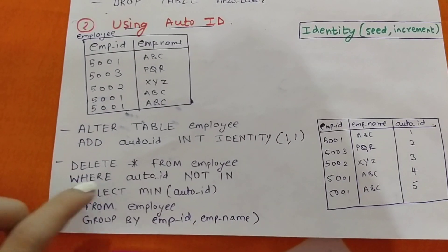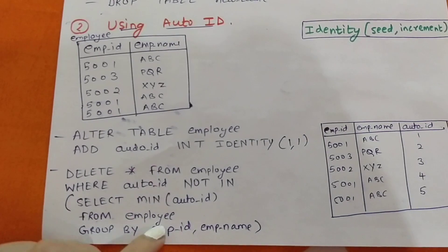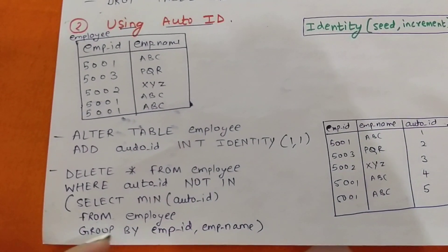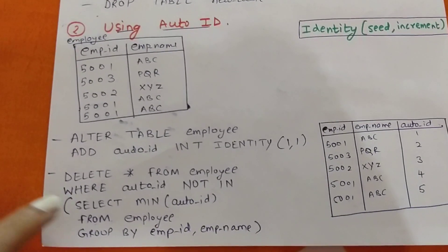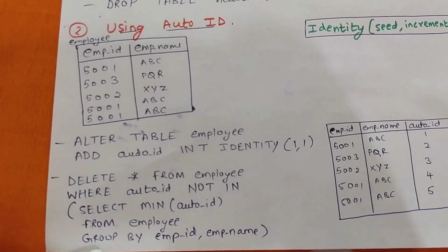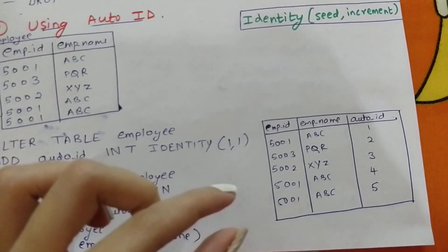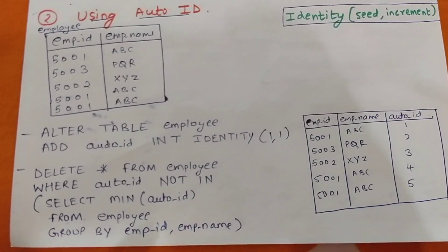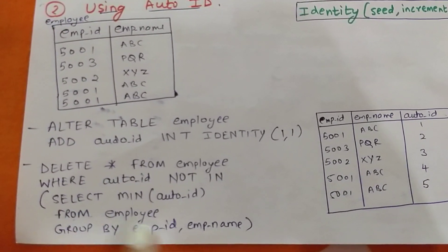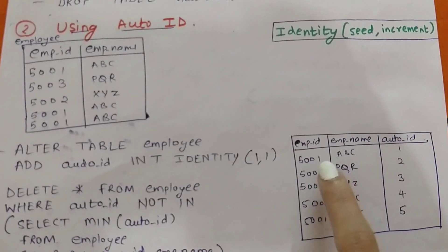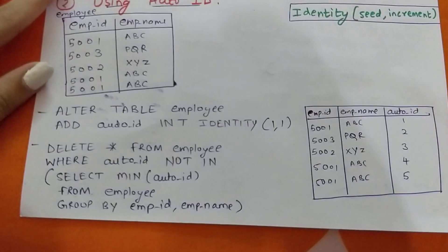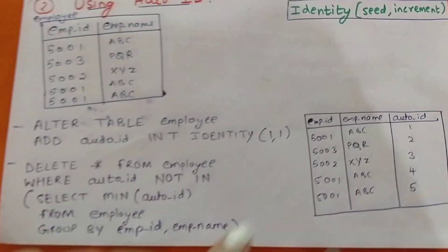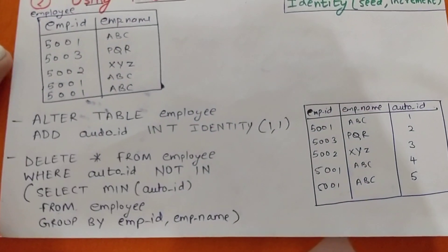The next step is: DELETE FROM employee WHERE auto_id NOT IN (SELECT MIN(auto_id) FROM employee GROUP BY emp_id, emp_name). The inner subquery executes first: SELECT MIN(auto_id) FROM employee GROUP BY emp_id. Since MIN is an aggregate function, we use GROUP BY. It groups all 5001s together, 5002s together, 5003s together, and selects the minimum auto_id from each group. It returns 1, 3, and 2 — not 4 or 5, because those are not the minimums.